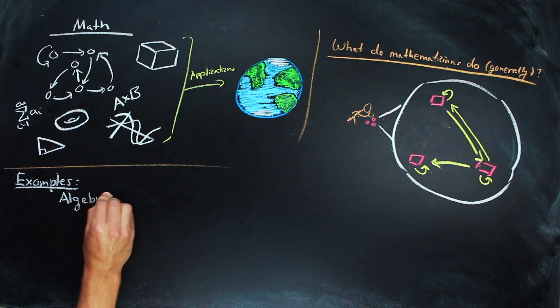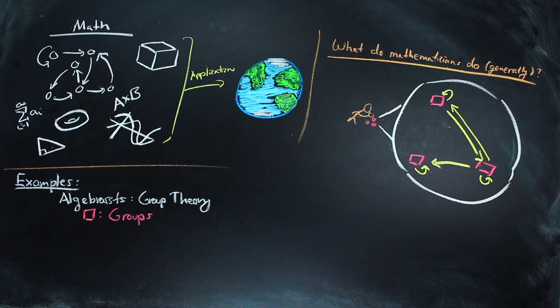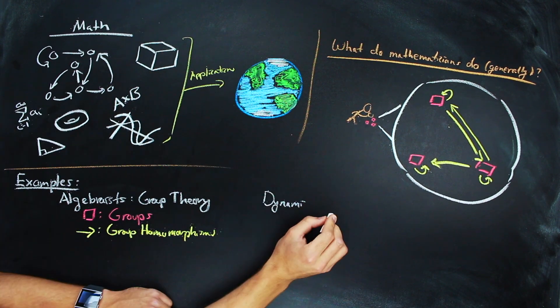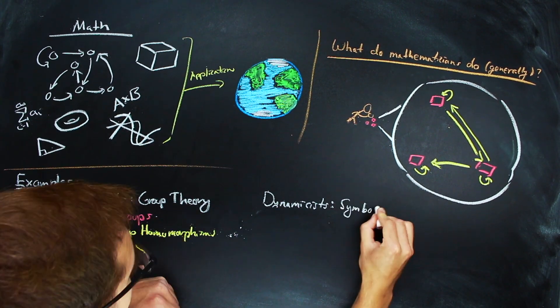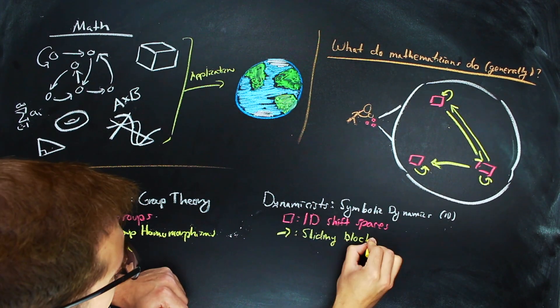Some algebrists study mathematical objects called groups, and functions that preserve the fundamental properties of groups, like group homomorphisms. On the other hand, some dynamicists work with one-dimensional shift spaces, and sliding block codes are a type of transformation between these objects.